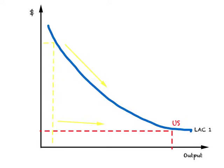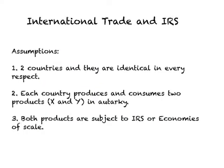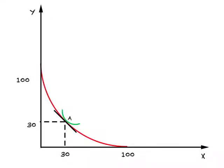For large returns to scale, these are the assumptions we make: there are two countries and they are identical in every respect in terms of production technology and consumer preferences. Each country produces and consumes two products, let's call them X and Y in autarky. Both products are subject to increasing returns to scale or economies of scale. When both industries are subject to increasing returns to scale, what we have is a decreasing cost PPC.